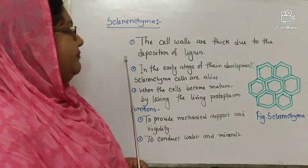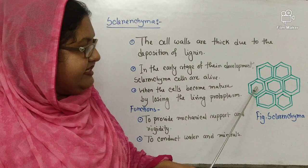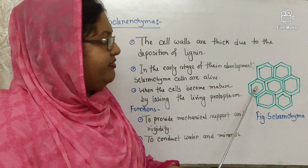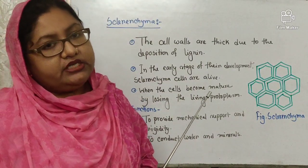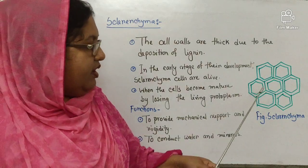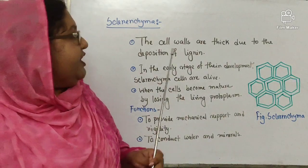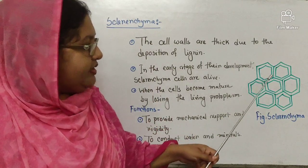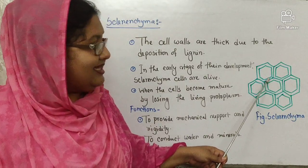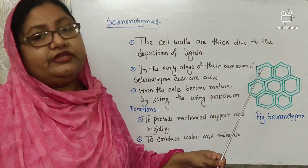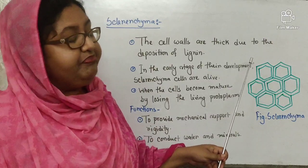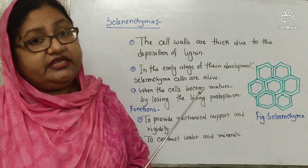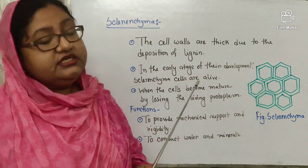Now, the characteristics of sclerenchyma. In the diagram you can see that there is no nucleus or protoplasm inside, because when the cells become mature they lose their protoplasm — that is why nucleus, protoplasm and cytoplasm are absent. The characteristics: the cell walls are thick due to the deposition of lignin. The cell wall is thicker than that of parenchyma and collenchyma, so in sclerenchyma the cell wall is thicker and lignin is deposited on the cell walls.